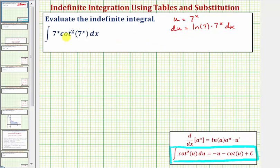Looking at our integrand now, notice how we don't have natural log seven times seven to the x dx. We only have seven to the x times dx. So let's solve this for seven to the x dx by dividing both sides by natural log seven. Simplifying, we'd have one over natural log seven differential u equals seven to the x dx.